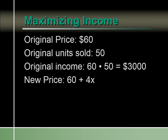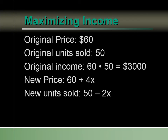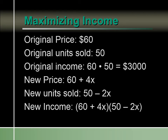The most important part is naming your variables. We let x be the number of price increases. Our new price is 60 plus 4x, because they increase by $4 each time. The unit sold goes down by 2 for each increase, so new units sold is 50 minus 2x. Income equals price times units sold, so our new income is 60 plus 4x times 50 minus 2x.